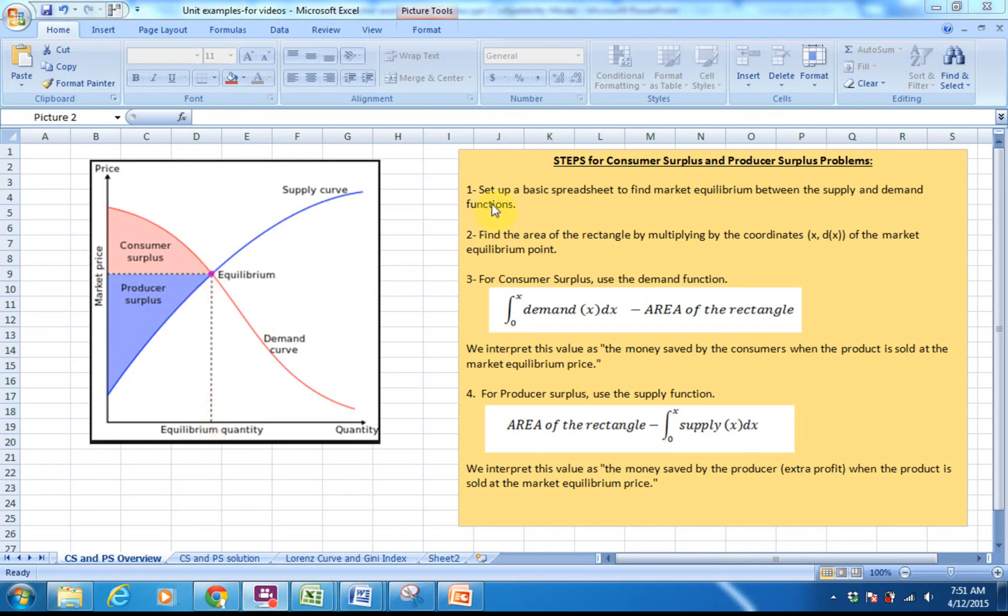Over in the orange text box at the right, you can see I've set up some basic steps. The first step is to set up a spreadsheet and find the market equilibrium between the supply and demand functions. The second thing we're going to do is find the area of the rectangle using our x and d(x), or x and y value, for the rectangle itself. That will allow us to multiply and find the area of the rectangle.